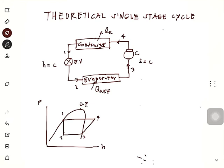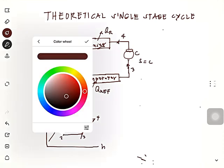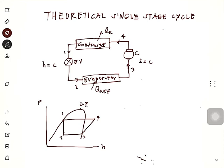Point one is considered to be saturated liquid. By throttling, the enthalpy is constant, so point two is a mixture of liquid and vapor at lower pressure and lower temperature. As it passes through the evaporator where we have Q-ref, the assumption is that at point three — the exit of the evaporator — it is assumed to be saturated vapor.